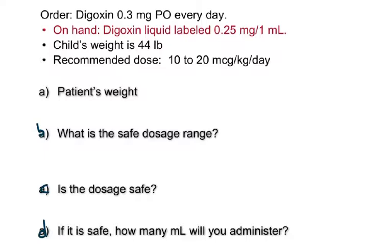The first thing is to find the patient's weight. He's getting digoxin 0.3 milligrams every day. What you have available is 0.25 milligrams per one milliliter, the weight is 44 pounds, and the recommended safe dose range is 10 to 20 micrograms per kilogram per day. To find his weight, we divide pounds by 2.2: 44 divided by 2.2 comes out to 20 kilograms.